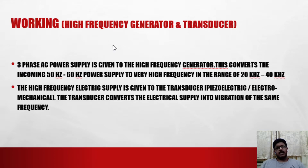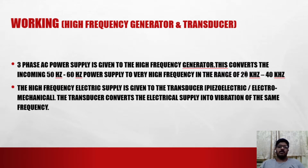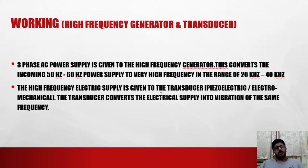First is the working of the high frequency generator. What this does is it takes the 50 hertz or 60 hertz input from the AC power supply and converts it to high frequency — that is, above 20,000 hertz or 20 kilohertz. Usually, ultrasonic machining is done in the range of 20 kilohertz to 40 kilohertz, or 20,000 to 40,000 hertz. Next is the transducer — it can be electromechanical or piezoelectric. It takes the output from the high frequency generator and converts electric impulses into vibrations, i.e., kinetic energy.